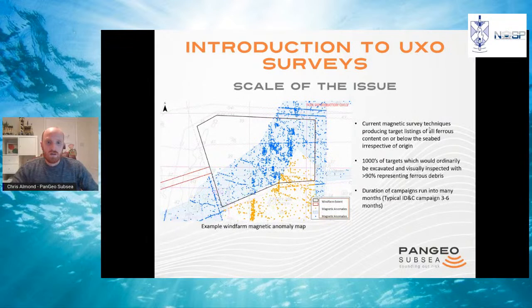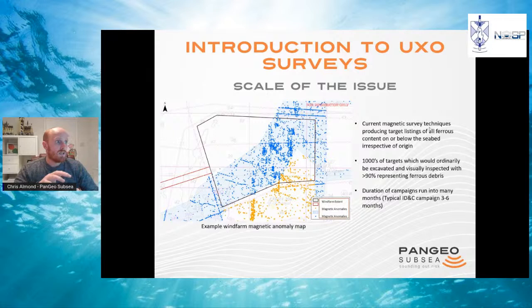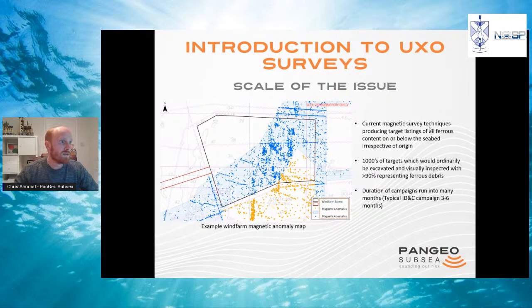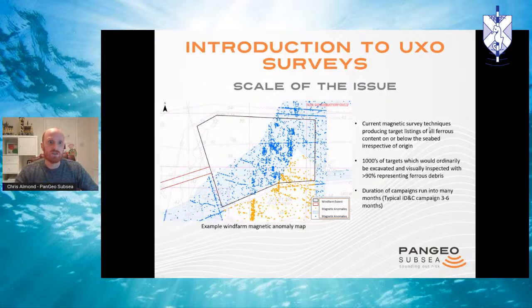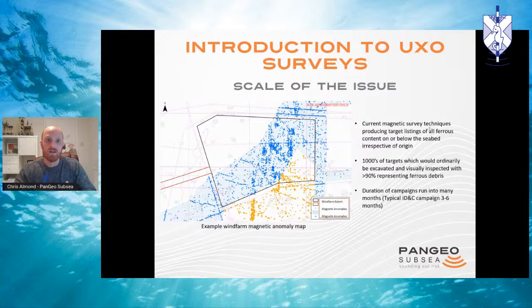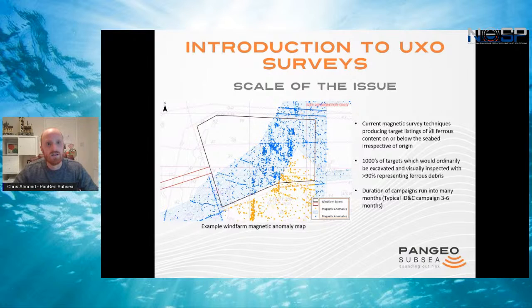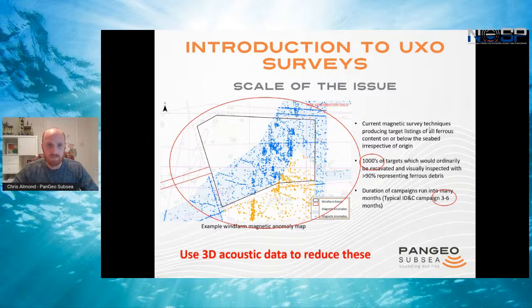This is a magnetic anomaly map of a wind farm development showing the scale of these issues. Target listings can be in the thousands of targets at a wind farm, representing everything ferrous from debris to potential munitions. At the moment, the vast majority of these targets are dug up by an ROV — excavating and visually inspecting them — only to find that over 90% is debris that could have been left in situ. The ID&C phase typically runs into several months. What we want to do is use 3D acoustic data to remove as many targets from that list as possible.